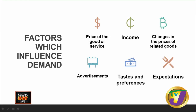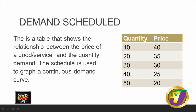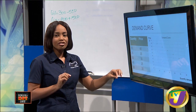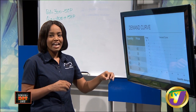Now let's look at the demand schedule — a tabular representation which shows the relationship between the price of a good or service and the quantity demanded. We will use the demand schedule to graph our demand curve. When the price of the good is $40, the quantity demanded is 10. When the price is lower at $35, the quantity demanded is 20. As the price continues to go down, the quantity demanded increases, consistent with the inverse relationship stated in the law of demand.